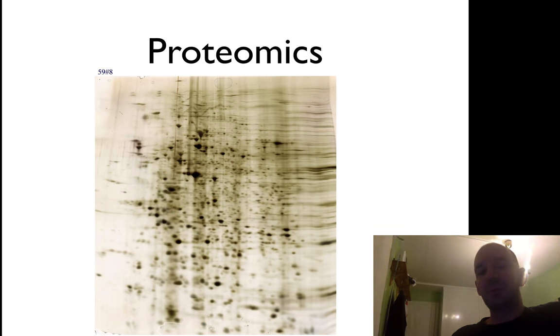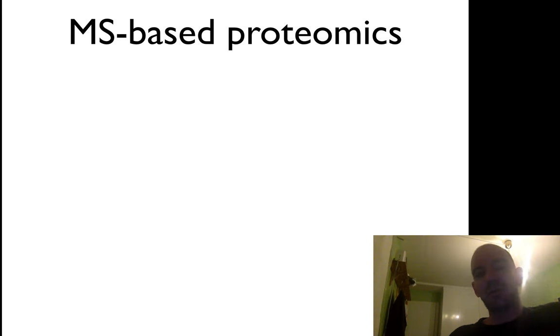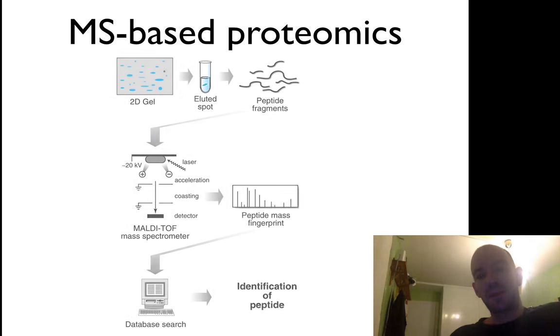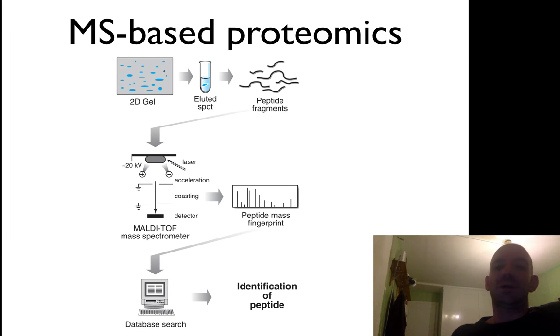A long time ago, you did things in two-dimensional gels. You basically tried to purify whole cells using two-dimensional gels and tried to interpret what is in each spot. However, nowadays, what you do is basically use mass spectrometry. The idea is you basically try to purify your proteins somehow, but you don't use the two gels.